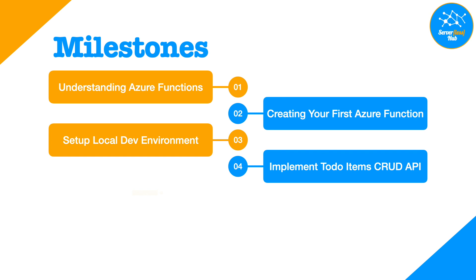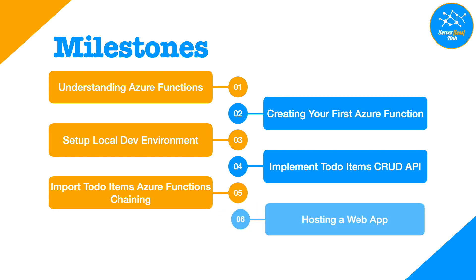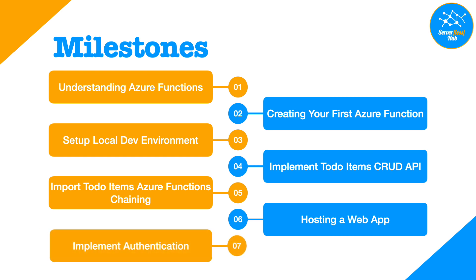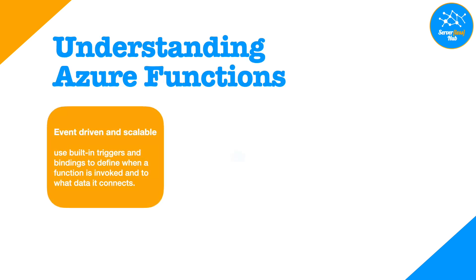Next, we will implement a To-Do item CRUD API, enabling create, delete, update, and get To-Do items. Then we will extend our API to import To-Do items using Azure Functions chaining. Then we will host a web app to call our API, and finally we will be using Azure B2C tenants to implement authentication to our API.